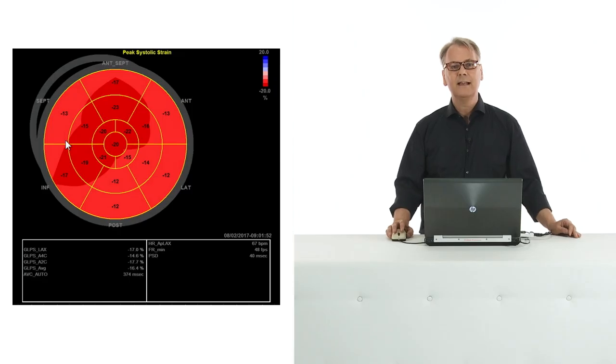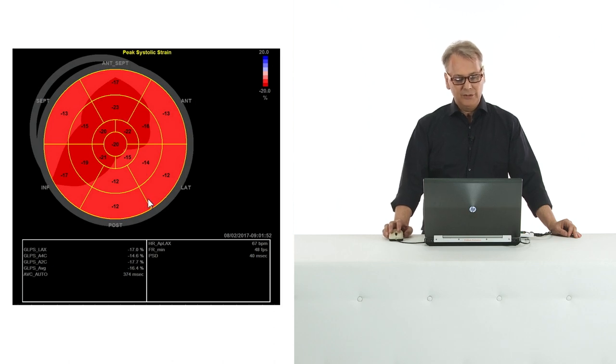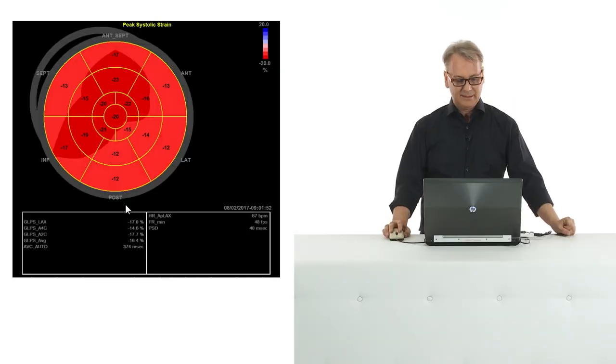So you tell the patient everything's okay and he leaves the ECHO lab. But what should you do in addition? Strain. Here is the analysis we performed in this patient, and all of a sudden you will see that yes, he does have a problem. We see a reduction in longitudinal strain in the basal, even in the mid segments. The apex is doing fine. You might see a slight reduction in longitudinal function in athletes at the base, but not to that extent. His global longitudinal function is reduced with only minus 16.4%.